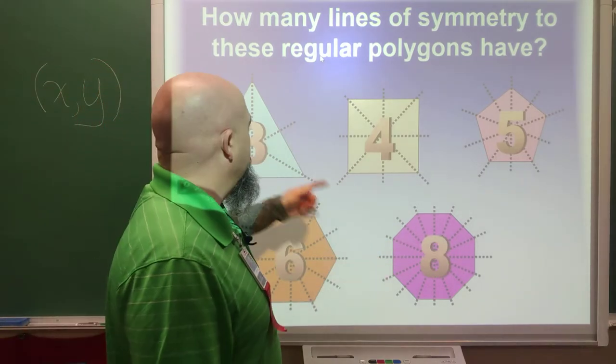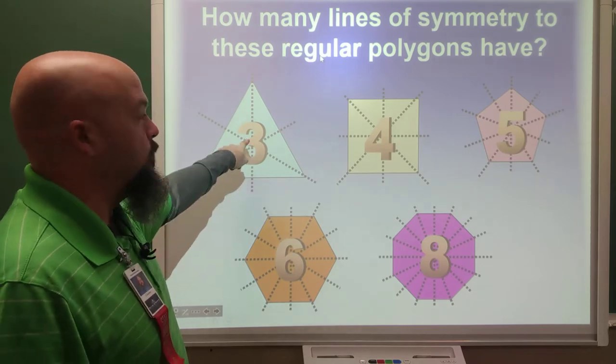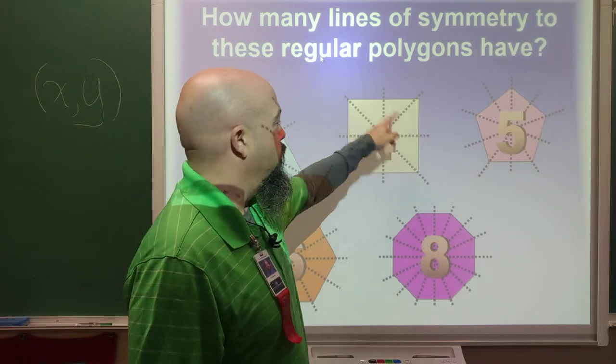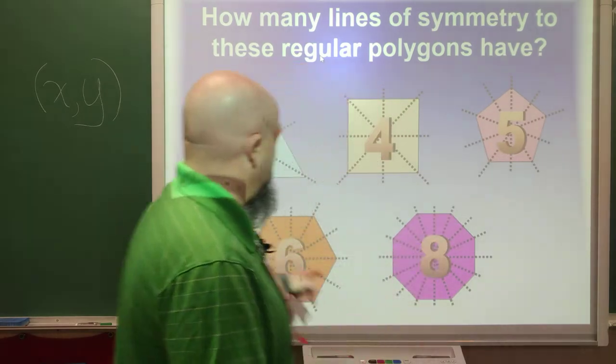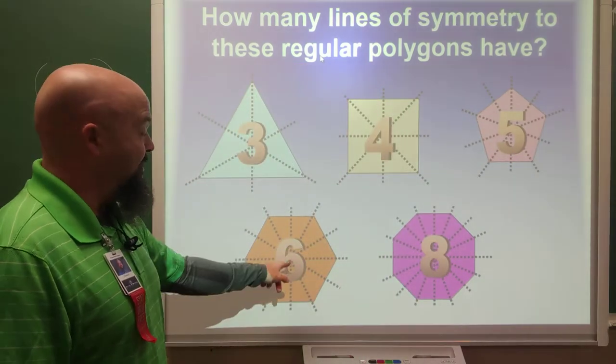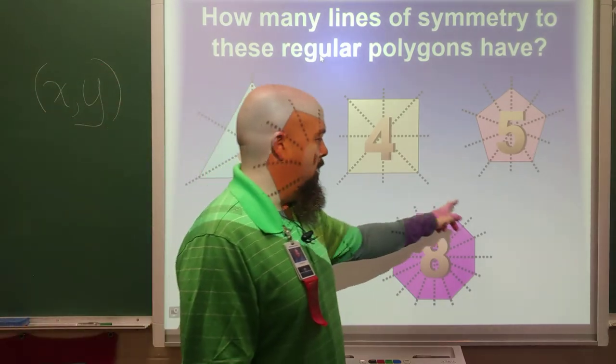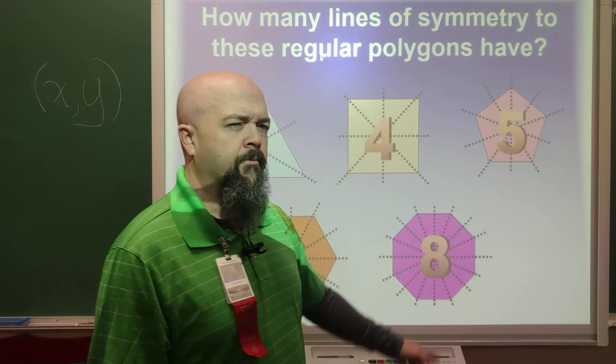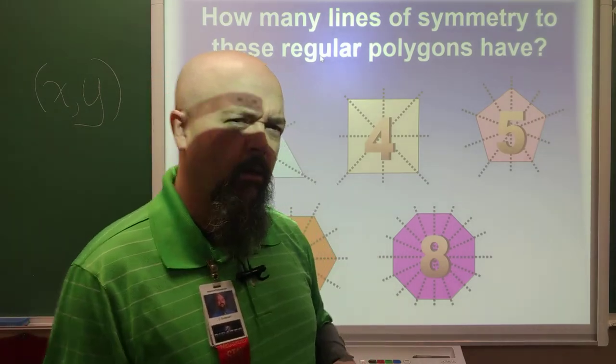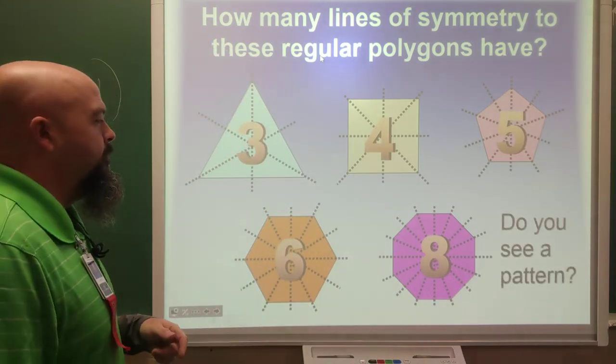So, maybe some of you are getting that connection. Triangle. Three sides. Three lines of symmetry. Square. Four sides. Four lines of symmetry. Pentagon. Five sides. Five lines of symmetry. Hexagon. Six sides. Six lines of symmetry. Octagon. Eight sides. Eight lines of symmetry. Make you think a little bit, doesn't it?